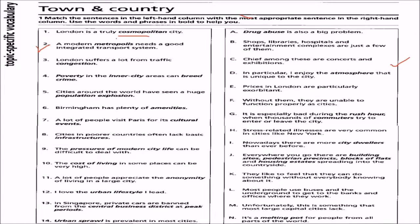First: London is truly a cosmopolitan city. Cosmopolitan — it is a melting pot for people from all parts of the world. That is why we call these cities cosmopolitan. Like Mumbai in India, it's a cosmopolitan city.